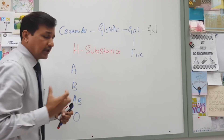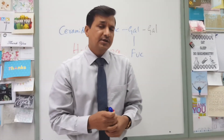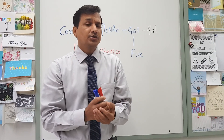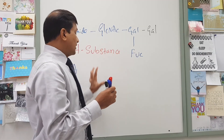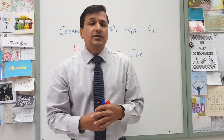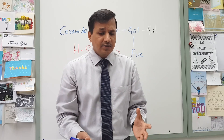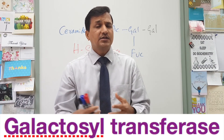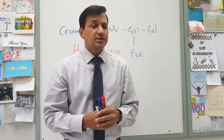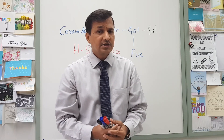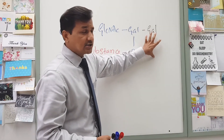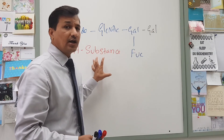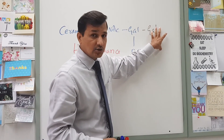Now the AB blood group person — their red blood cells will have both A antigen and B antigen, a mixture of both. That is why they belong to the AB type of blood group. Their genes express both galactosyltransferase and N-acetylgalactosamine transferase — both genes are expressed, so they have both enzymes. That means they have A antigen (H substance with N-acetylgalactosamine) and also B antigen (H substance with only galactose).